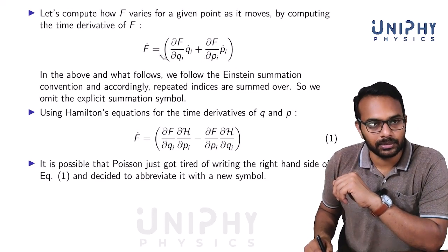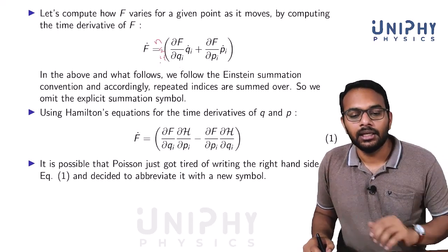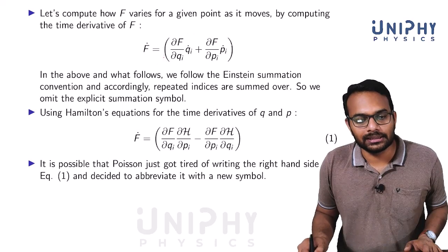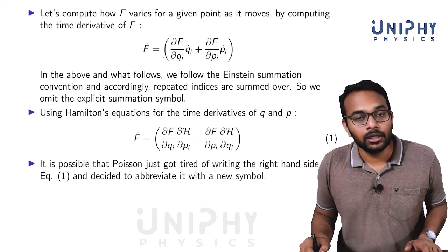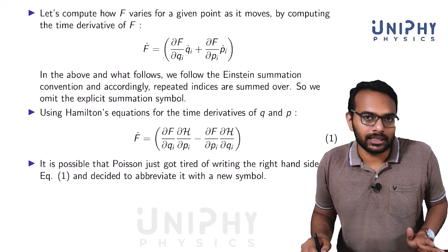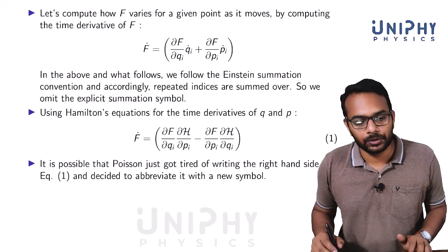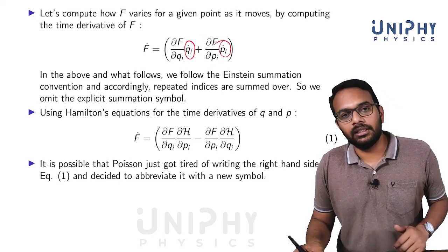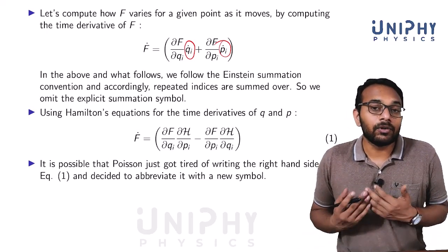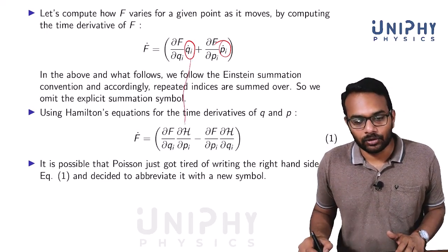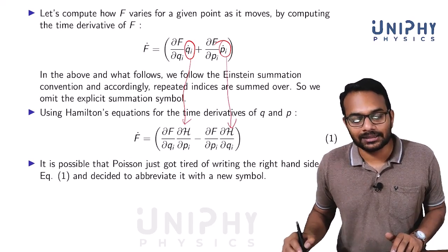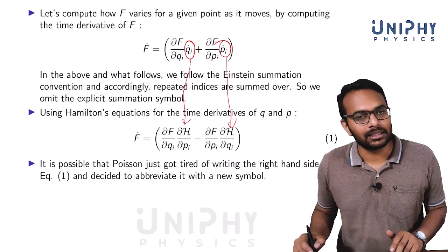The Einstein summation convention says that if some index is repeated, you sum over it. There is summation from i=1 to n. We know that q_i and p_i evolve governed by Hamilton's equations: q_i-dot equals ∂H/∂p_i, and p_i-dot equals −∂H/∂q_i. So f-dot can be written in terms of these.